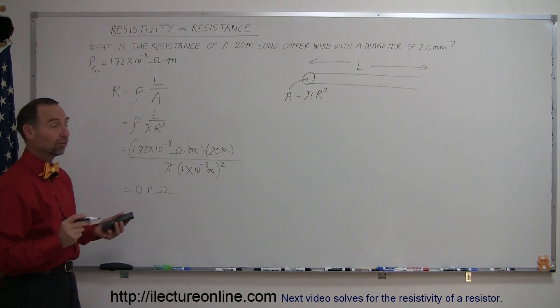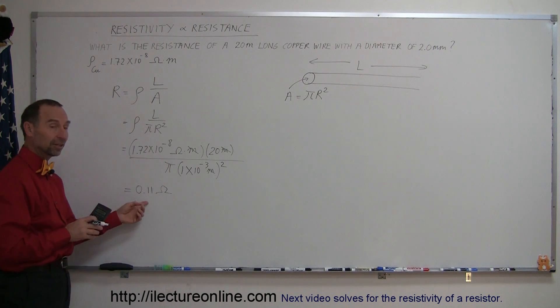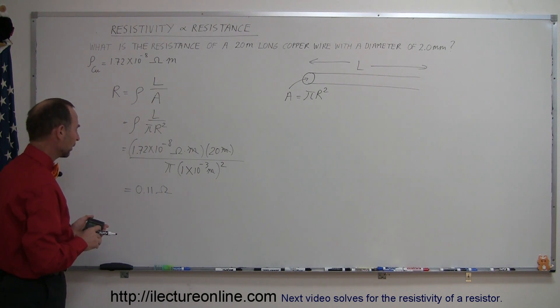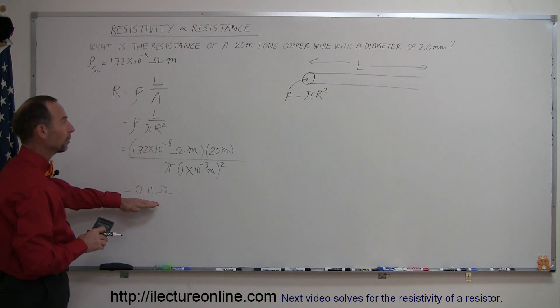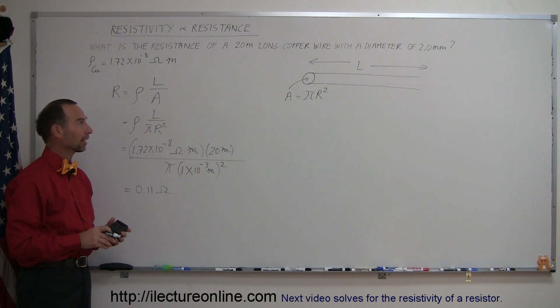You can see that the resistance of a 20 meter long wire, even though it's made out of copper, is not necessarily insignificant compared to devices that we connect to the wire. This is probably relatively small, but it cannot be neglected. We do know that we have some power loss in electrical wiring.